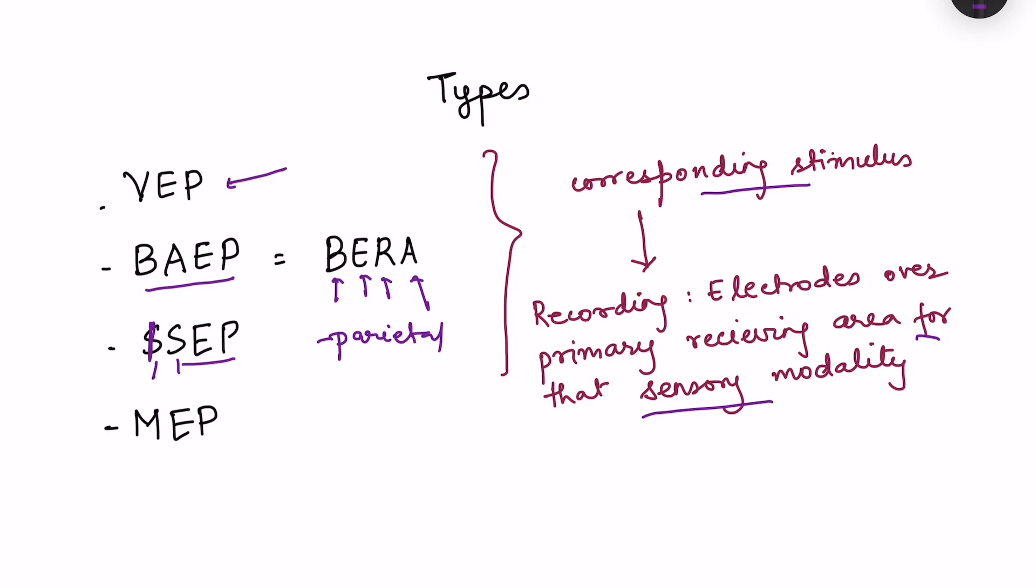There is another one in which motor stimulation is given. So that is motor evoked potential. In this, stimulus is given to the motor cortex and the response is recorded from the muscle. So these are the different types of evoked potentials.